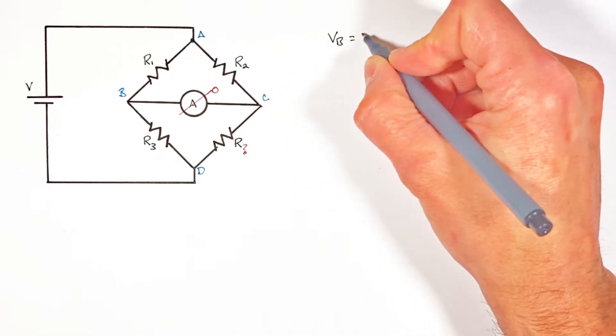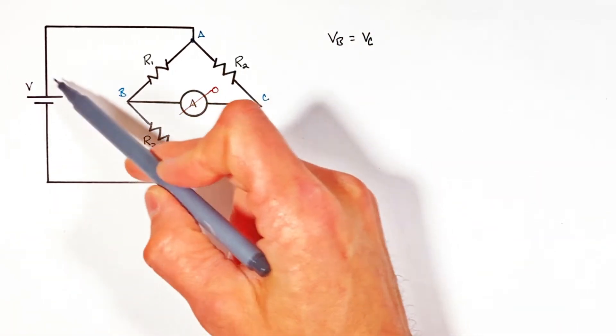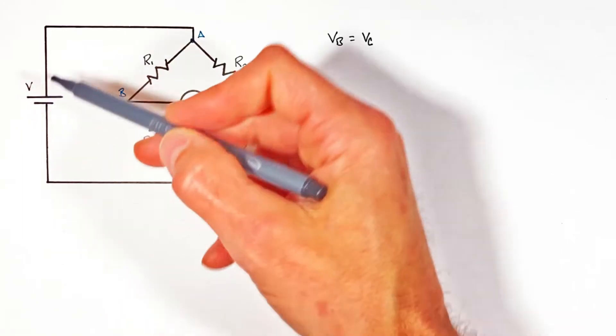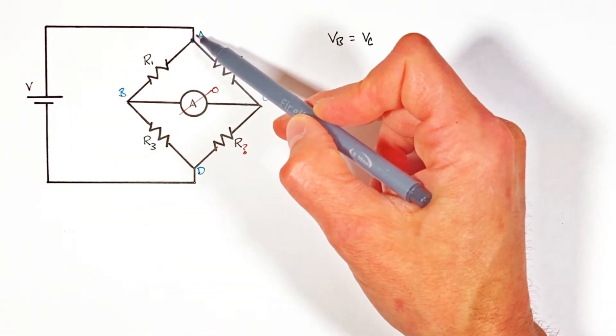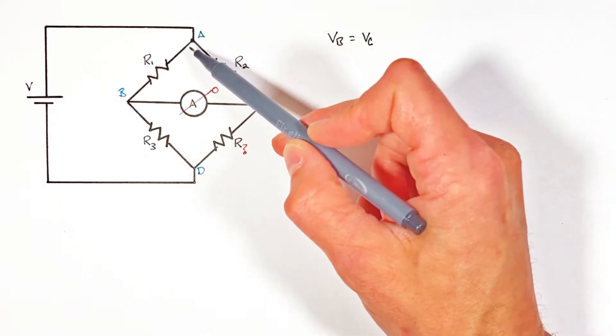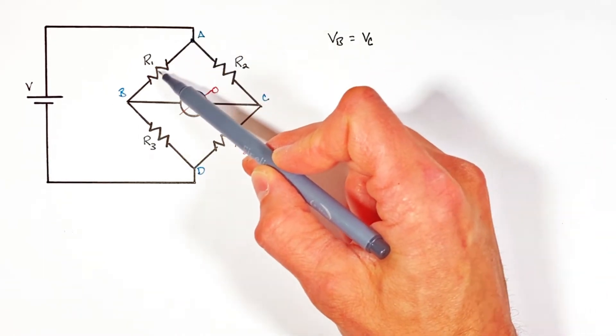Now regardless of the voltage coming out of the battery, there's going to be some potential as the charge or current travels through this wire to point A. Now regardless of whether the current travels through resistor one or resistor two, we know it's going to go from whatever the voltage was at the battery and at point A down to whatever the potential is at this wire connecting B to C.